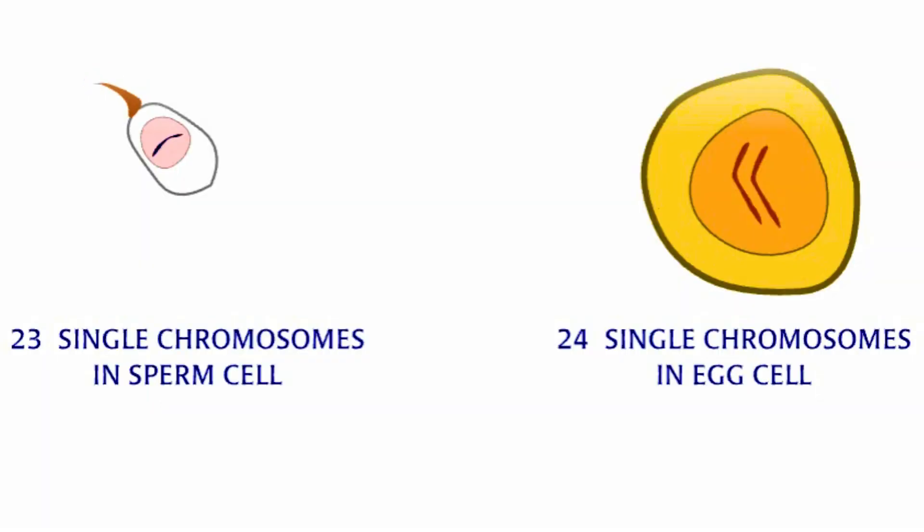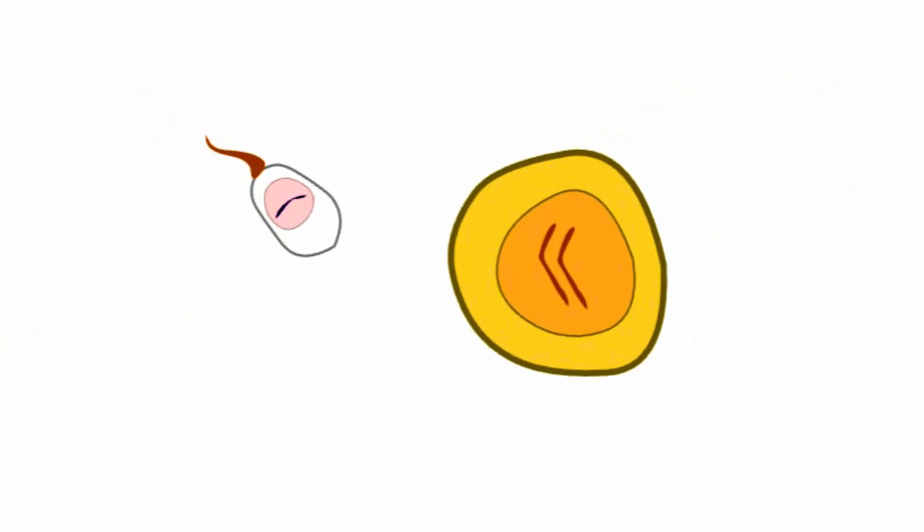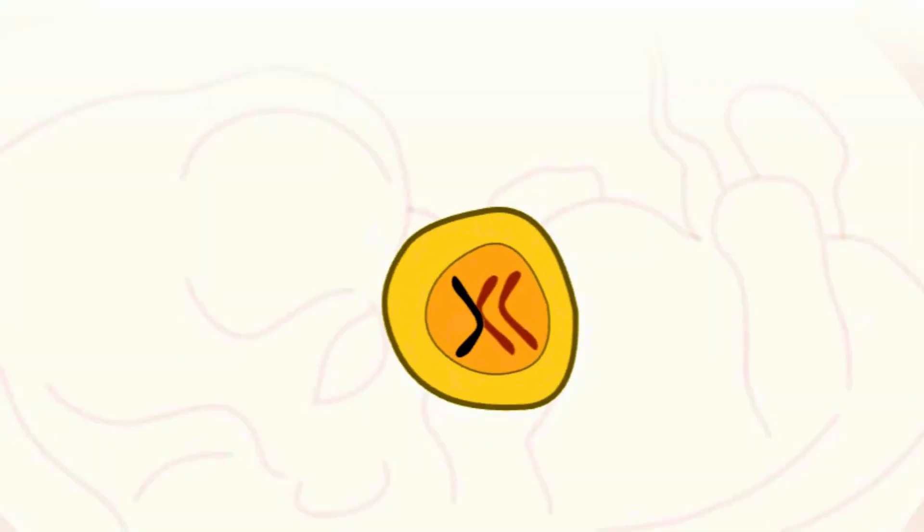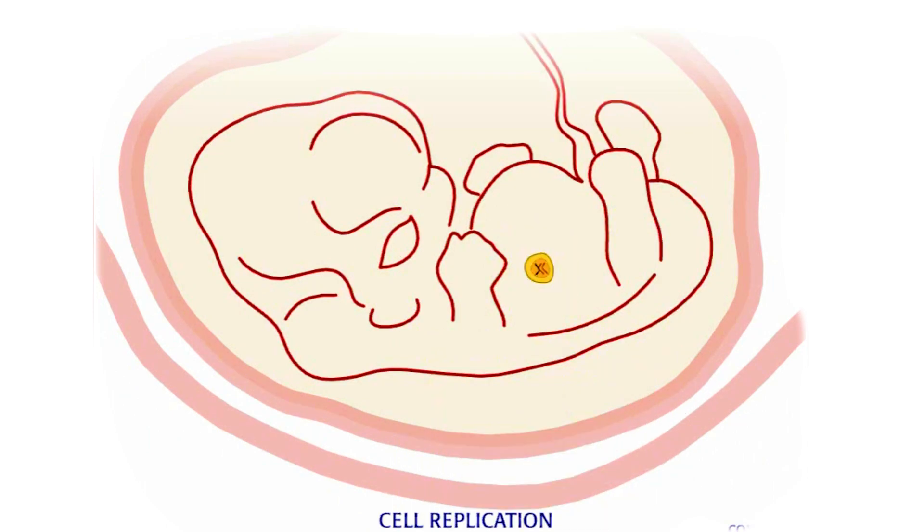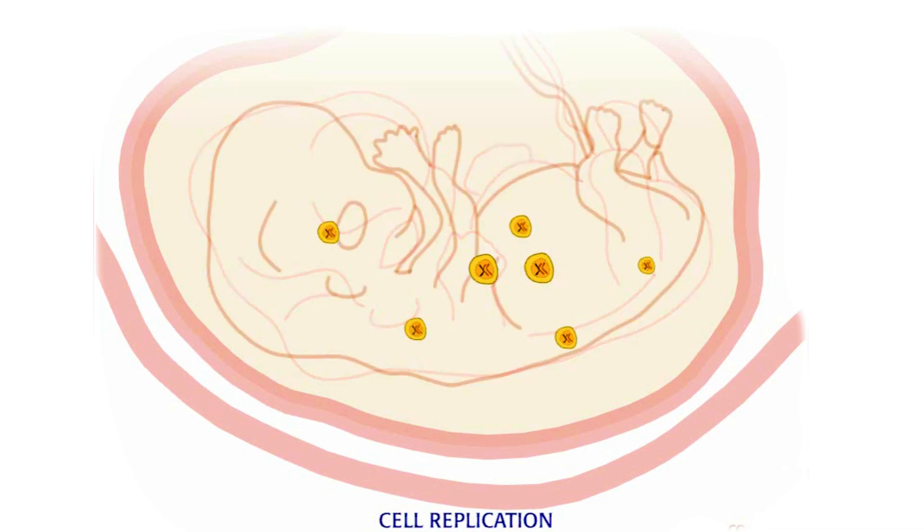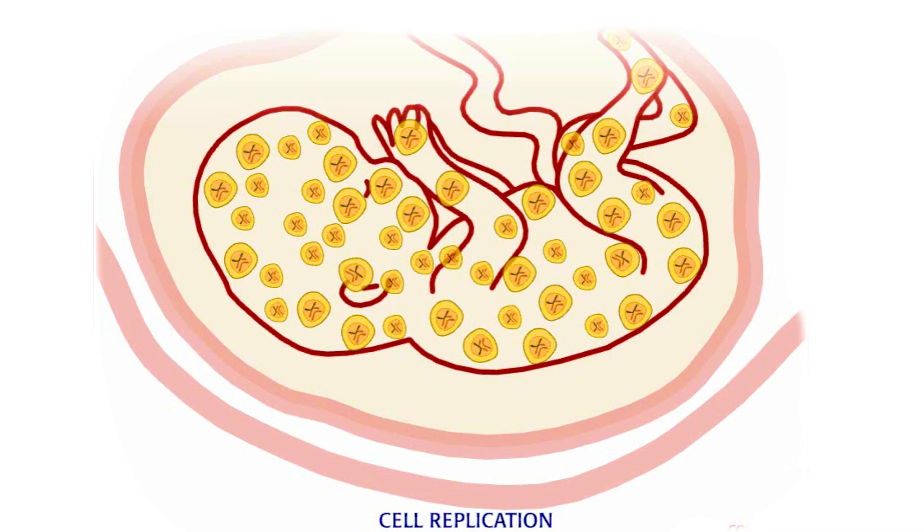Non-disjunction results in Down syndrome when an egg or sperm cell with two chromosome 21s merges with a normal mate, one chromosome 21 cell. As the embryo develops, the extra chromosome 21 is replicated in every cell of its body.